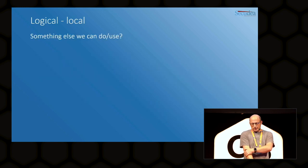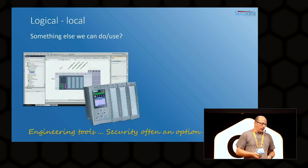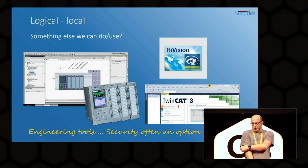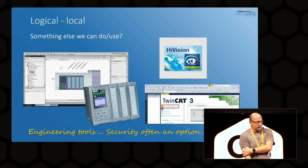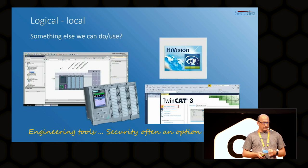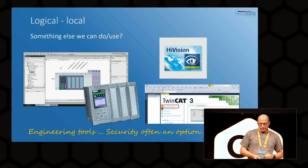Something else you can do: we have physical and logical access to the network. Imagine access to a SCADA network — why not use engineering tools? In many occasions security has been forgotten or treated as an option. If you use TIA Portal you'll see almost every Siemens PLC out there. If you use HiVision for Hirschmann switches, the same thing. Or if you use TwinCAT, there's more I'll tell you in a few slides.